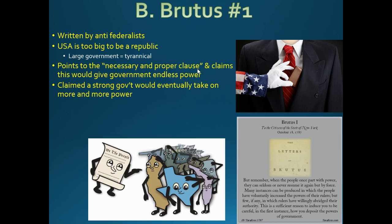There is a clause in the Constitution called the necessary and proper clause, which says the government can do whatever is necessary and proper to carry out its other duties. That sounds kind of scary — who decides if it's necessary and proper? The courts. That's what the courts are there for. Anti-Federalists thought the government would just keep getting stronger and stronger.